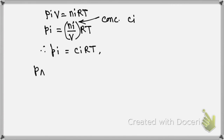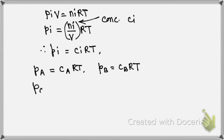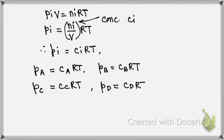For reactant A, PA equals CA into RT. For reactant B, PB equals CB into RT. For product C, PC equals CC into RT. And for gas D, PD equals CD into RT.